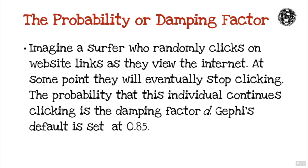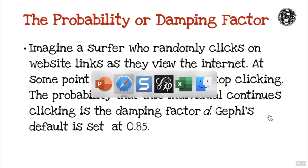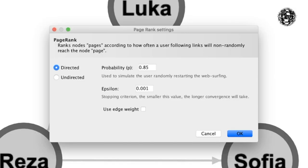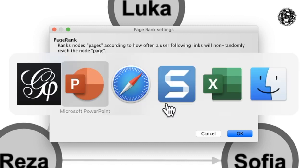Now, we saw the probability, or sometimes known as the damping value. Here we can see the probability P, which is also known as the damping vector. And the default within Gephi is 0.85, but you can change it if you want. And I'm going to do the example with 0.7, just to mix it up a bit.